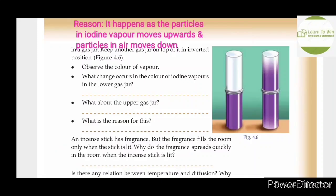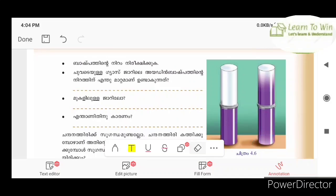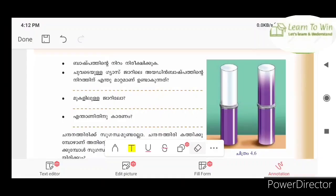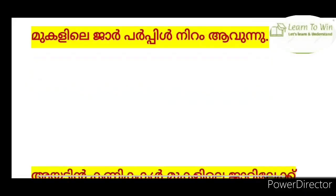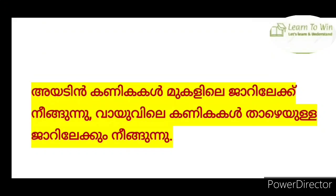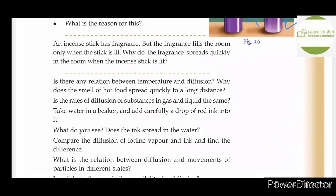It happens as the particles of iodine vapor move upward and the particles in the air move down. The color of iodine vapor gets red. Why? The incense stick has fragrance, but the fragrance fills the room only when the stick is lit. Why does the fragrance spread quickly in the room when the incense stick is lit?